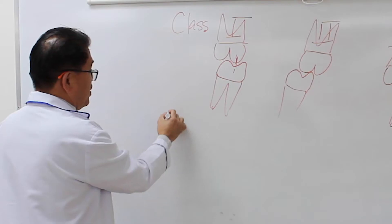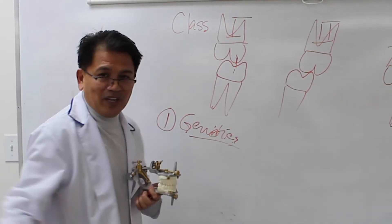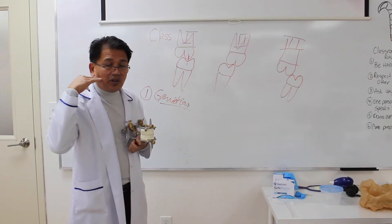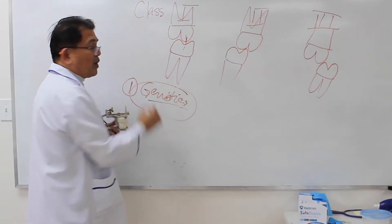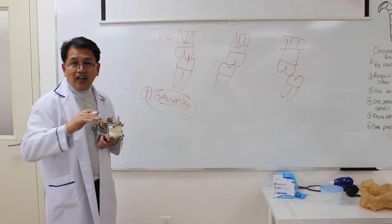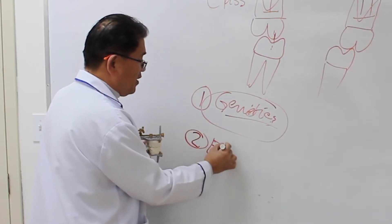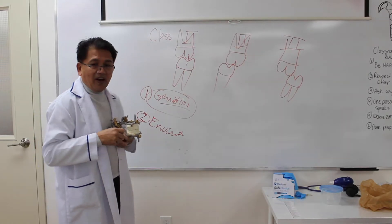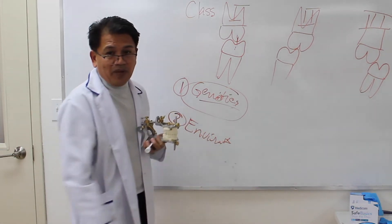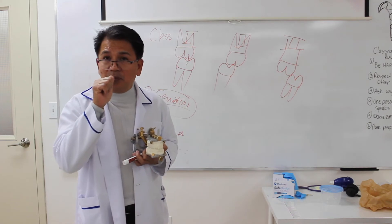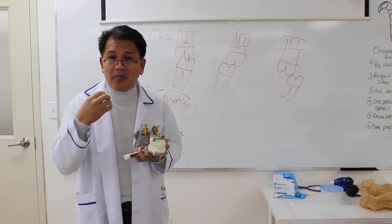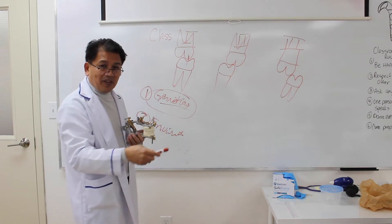How do these happen? First, genetics will determine a lot — your skeletal jaw structure will be Class 1, 2, or 3 based on your genetics. There are things we can do, especially if we catch the patient at a very young age. The second cause is environmental: anything that affects jaw growth, such as a mouth-breathing habit, a thumb-sucking habit, or allergies that impede the airway — all of these are environmental factors that affect the bite.